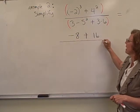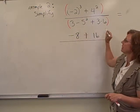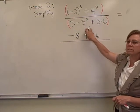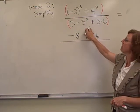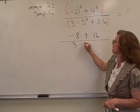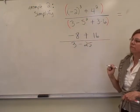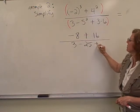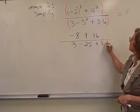and I'm going to divide that whole thing by the denominator here. And so in the denominator, I'm going to also take care of the exponent that I have, which is just 5 squared, so I have 3 minus 25 for 5 squared, and then plus 3 times 6.